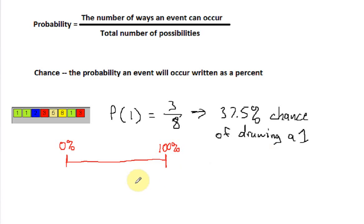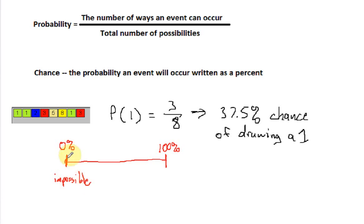This idea of chance can be thought of in terms of a continuum — and just like probability also — from a zero percent chance of something happening up to a 100 percent chance of something happening. A zero percent chance means it will not happen; it is impossible. An example of that: the probability that I draw a six out of this box is zero, because there is no six in the box. So that is an impossible event — a probability of zero, or a zero percent chance.